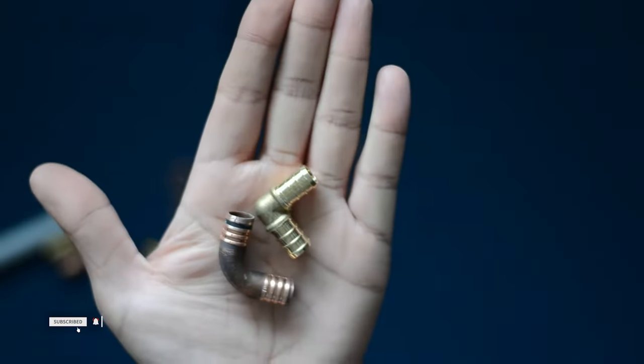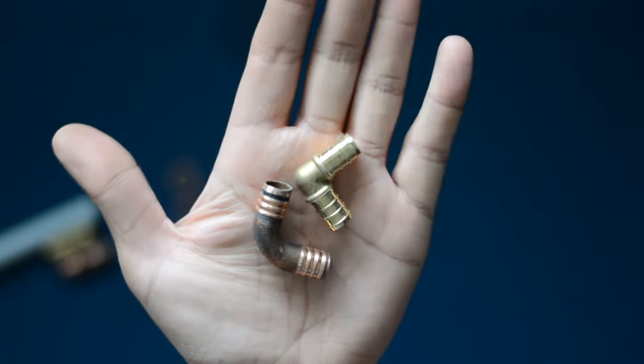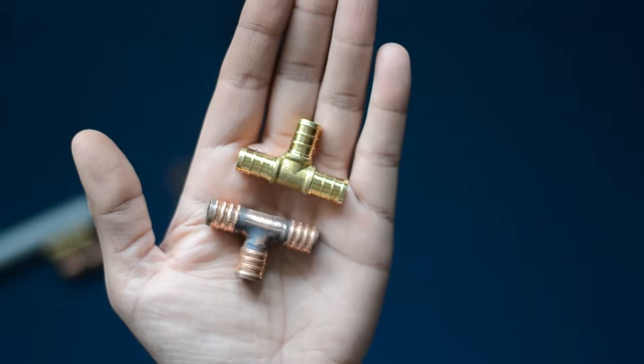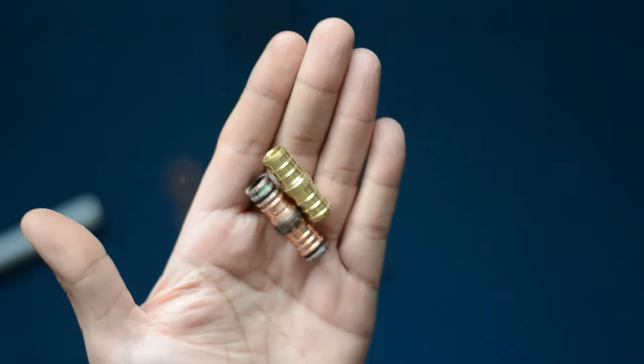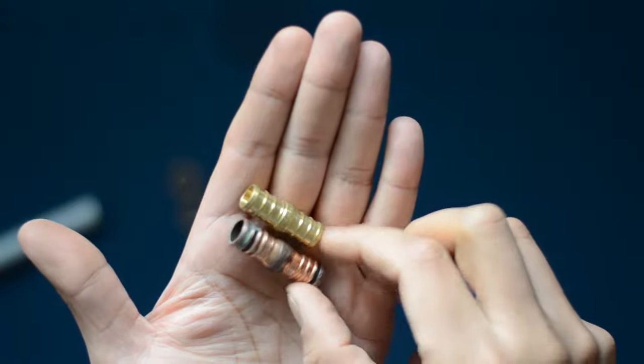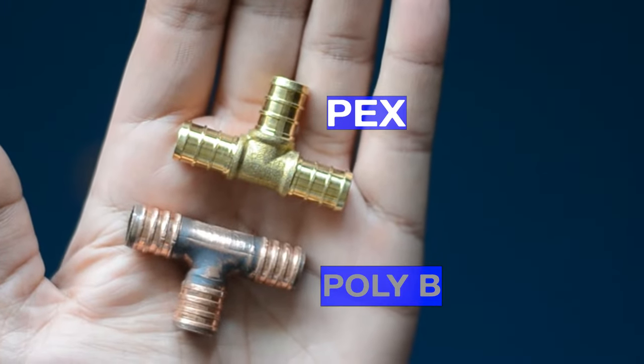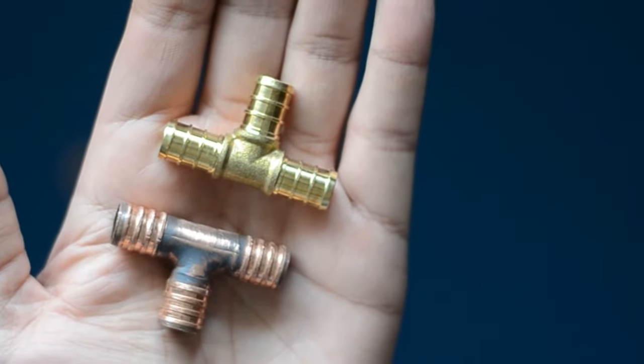That's why poly B fittings are also bigger in size. I recovered these fittings from scrap pipes we changed with pex for this video. You can see that ridges on the fittings are also different from each other.